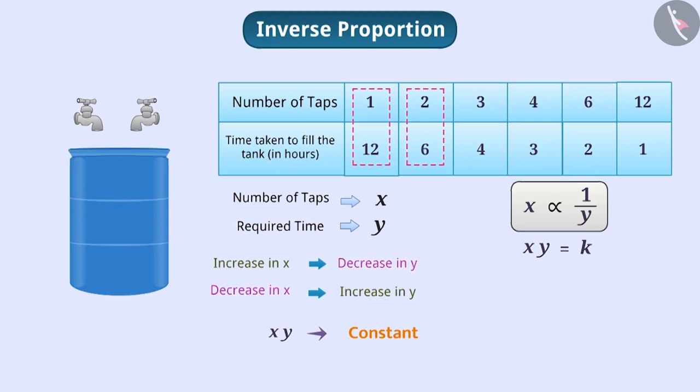In such a case, if the values of x are x1, x2, x3, etc., and the corresponding y values are y1, y2, y3, etc., then x1 y1 is equal to x2 y2 is equal to x3 y3 is equal to etc., is equal to k.